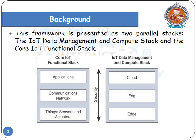If you see this diagram, the Core IoT Fundamental Stack and IoT Data Management and Compute Stack are divided into two parts. In the middle of this architecture, there is a security line which provides security for the overall system. We are going to learn about security in detail in further chapters.